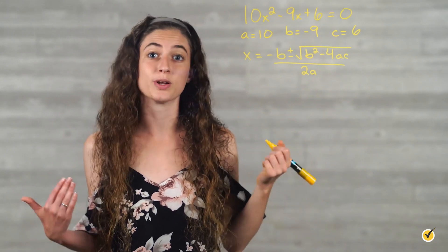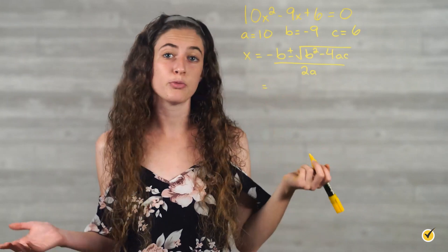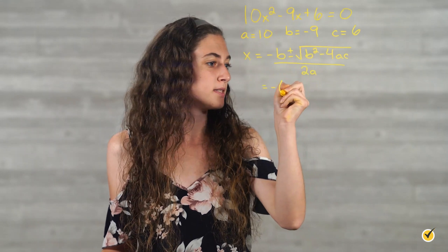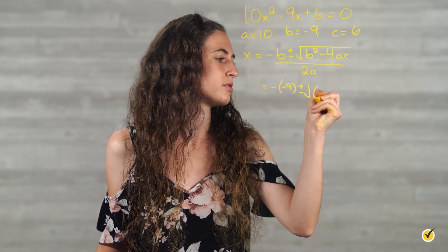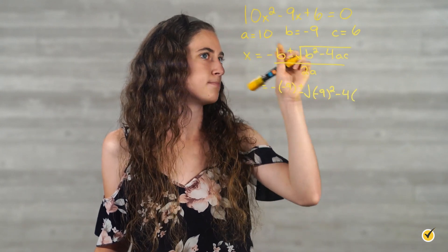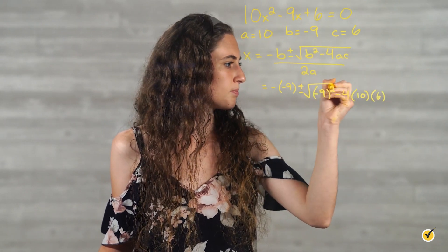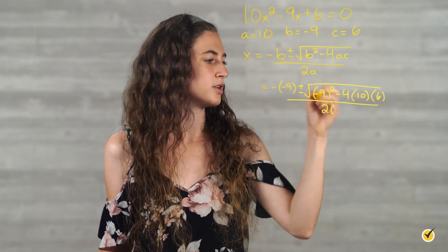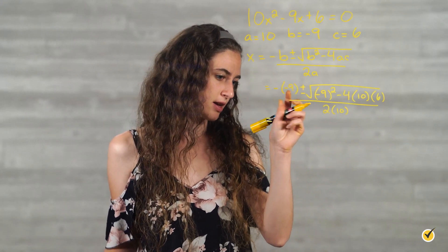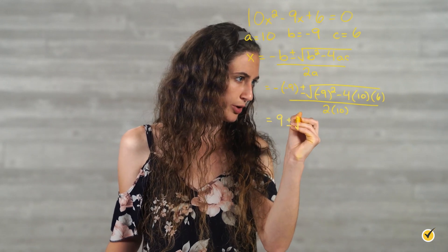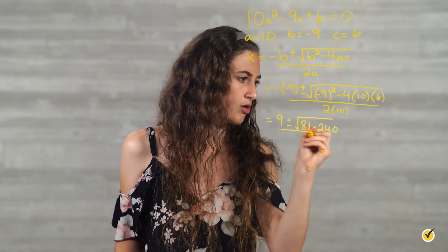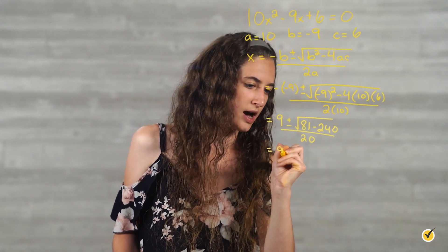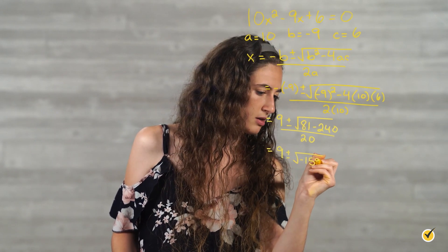Writing out formulas helps you remember them, so whenever you can, it's a really helpful thing to do. Now all we have to do is plug in our numbers. So negative b — b is negative 9, so be careful: you need to make sure you have negative negative 9. Plus or minus the square root of b squared, negative 9 squared, minus 4 times a, which is 10, times c, which is 6, all over 2 times 10. Minus a negative equals a positive, so we have positive 9. Plus or minus the square root of negative 9 squared is 81, and then 4 times 10 times 6 is 240, so we have minus 240, all over 2 times 10 is 20. So this gives us 9 plus or minus the square root of negative 159, over 20.